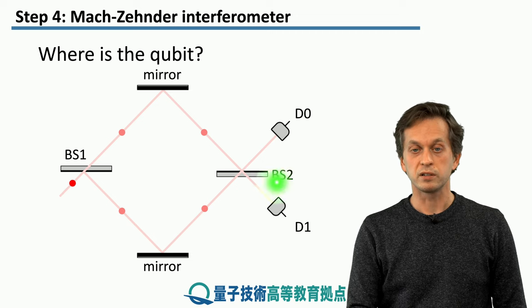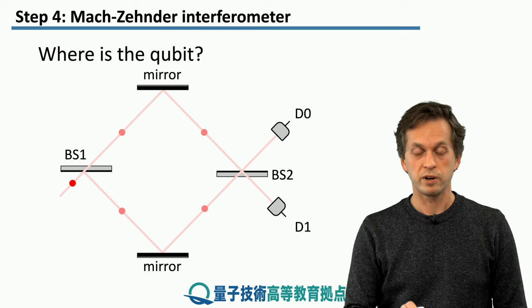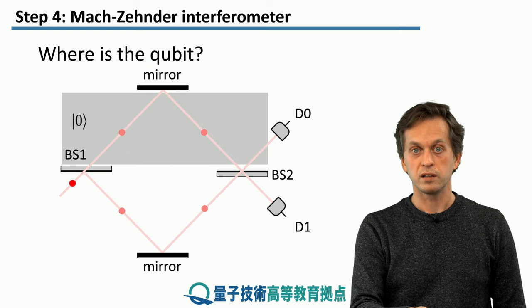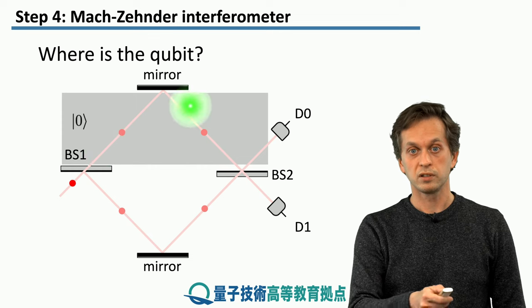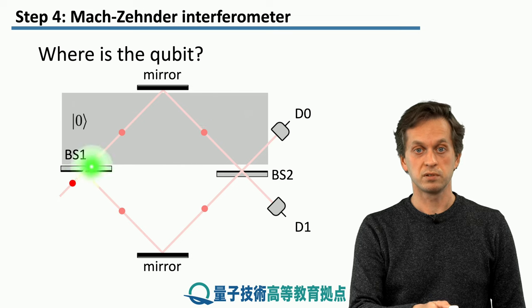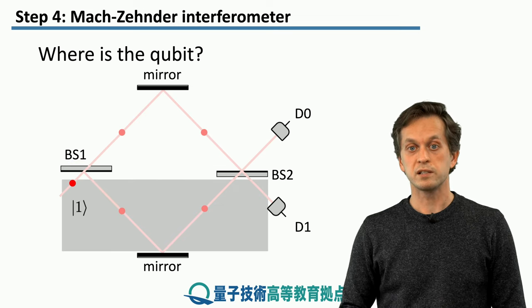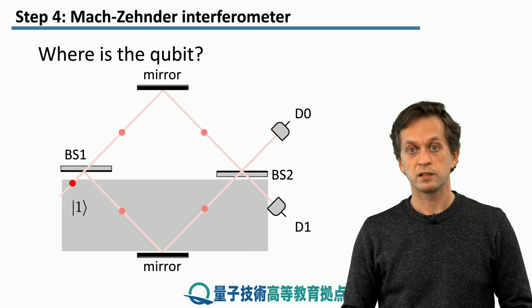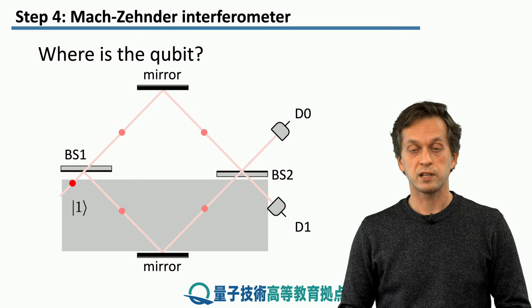Also, the Mach-Zehnder interferometer implements our qubit. How? Where is the qubit? Well, if the photon is found in the top half of the interferometer, we say that it's in the state 0. On the other hand, if it's found in the bottom half, we say that it's in the state 1. So here, the different paths encode different computational states of the qubit.